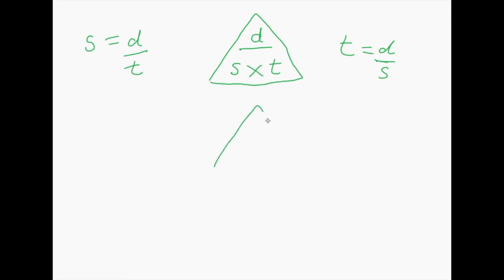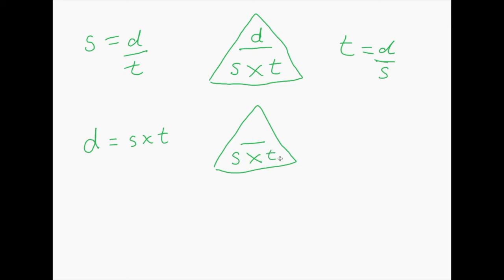What if you get an equation that isn't something divided by something? The second rule for the magic triangle — again, start by drawing a top shelf, then split the bottom into two bits with a multiplication sign. What if it says distance equals speed times by time? I've got something times by something and I've got room for something times by something, so shove those things in there. It doesn't matter if it's s times by t or t times by s, because two times by four is the same as four times by two.